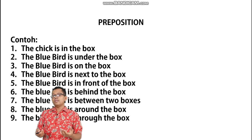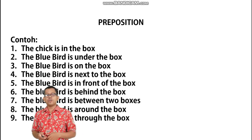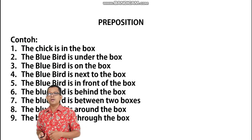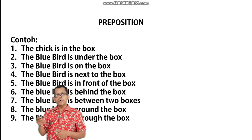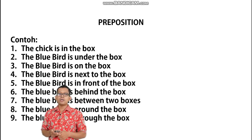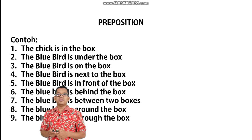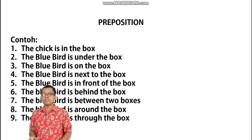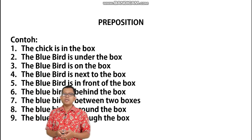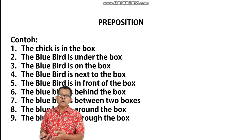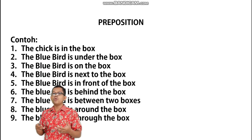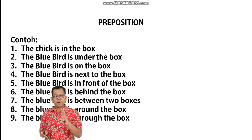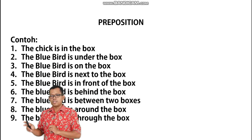Sekarang coba kita bacakan contohnya. First one: the chick is in the box. The blue bird is under the box. The blue bird is on the box. The blue bird is next to the box. The blue bird is in front of the box. The blue bird is behind the box. The blue bird is between two boxes — berarti kan di situ perbedaannya, 'between' pakai 'two boxes', boxnya sudah jamak.